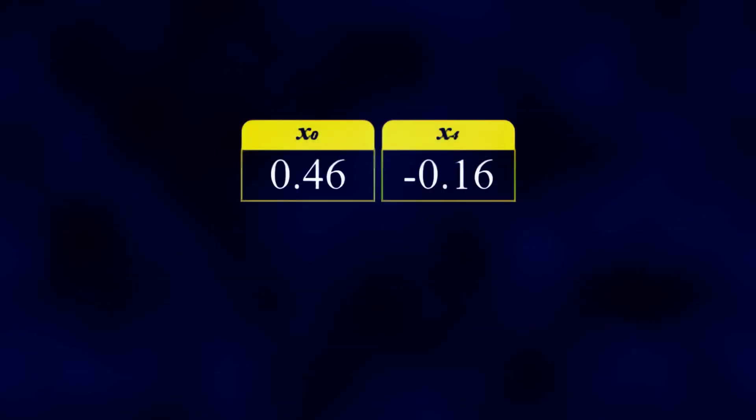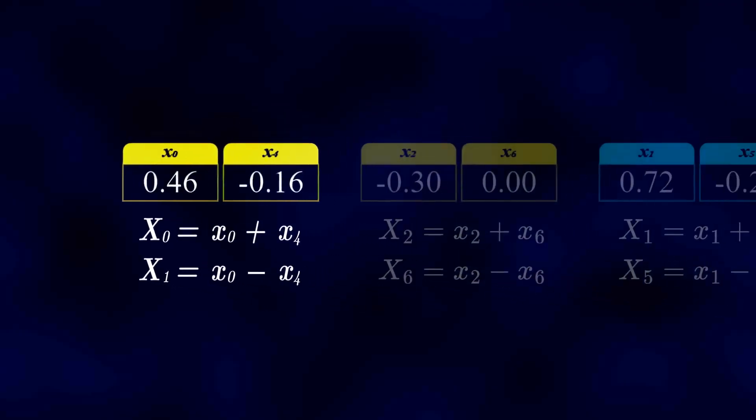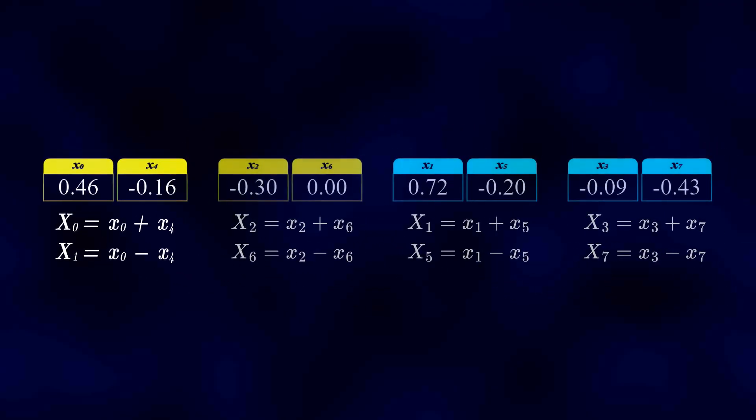This shows how simple a two-point DFT is to compute. The sum of the two samples gives the contribution of the frequency component at index zero, while the difference between them gives the contribution at frequency index 1. This two-point DFT is then applied to each pair of samples.